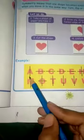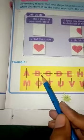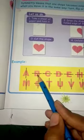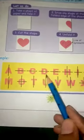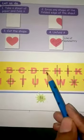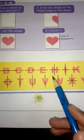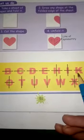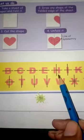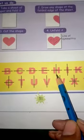Let's look at alphabet examples. A, B, C, D, E are symmetric alphabets. F is not a symmetric alphabet.